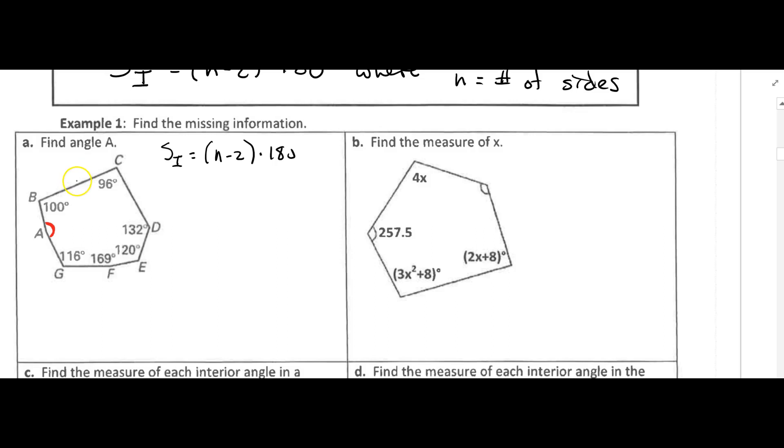Let's see, we've got 1, 2, 3, 4, 5, 6, 7 sides. So N is equal to 7.